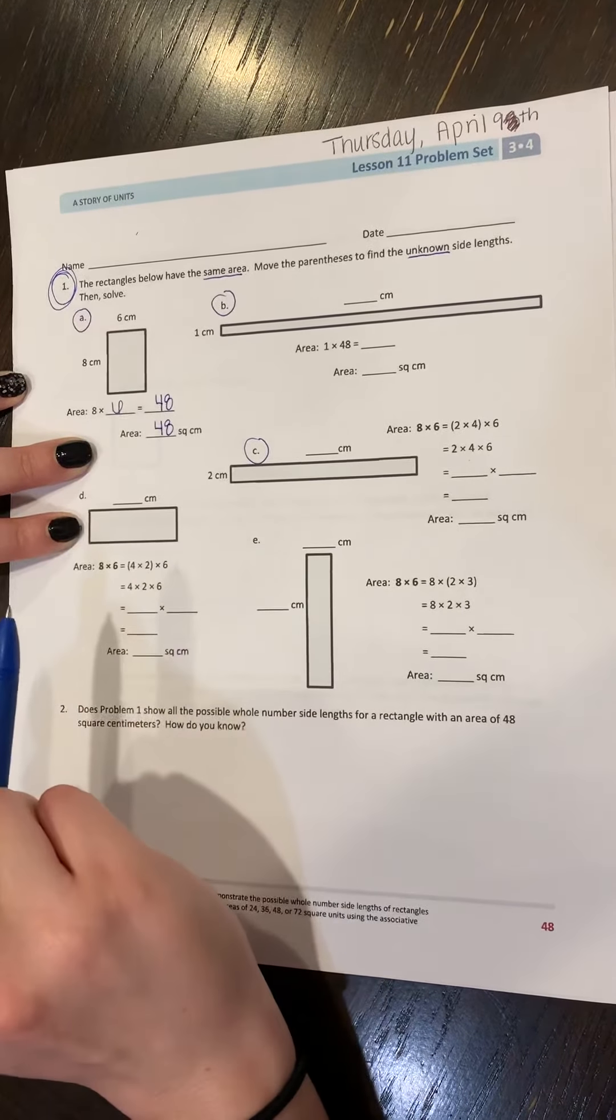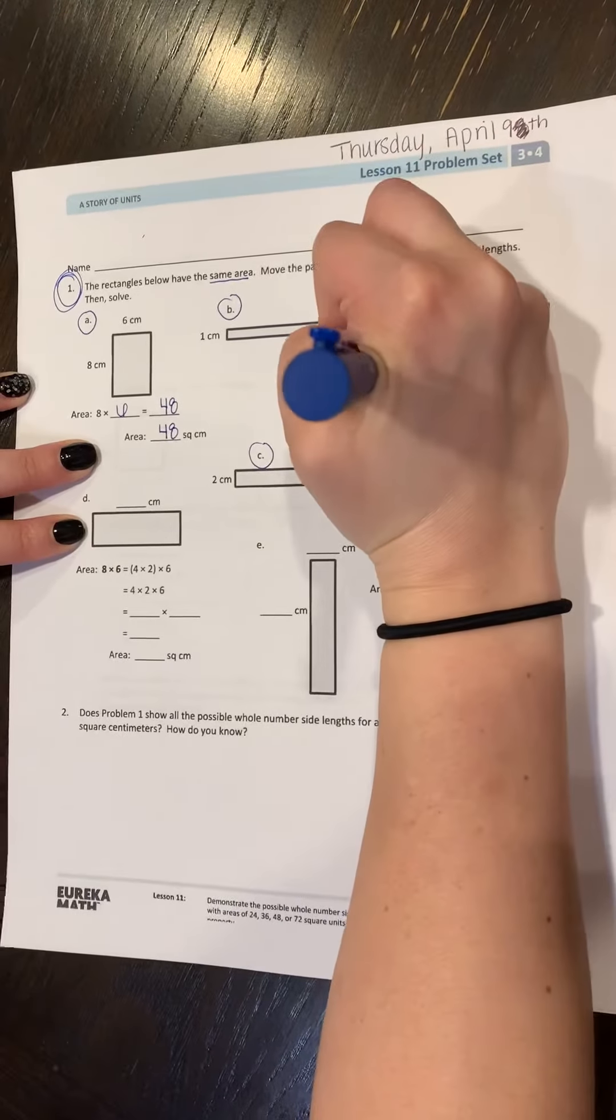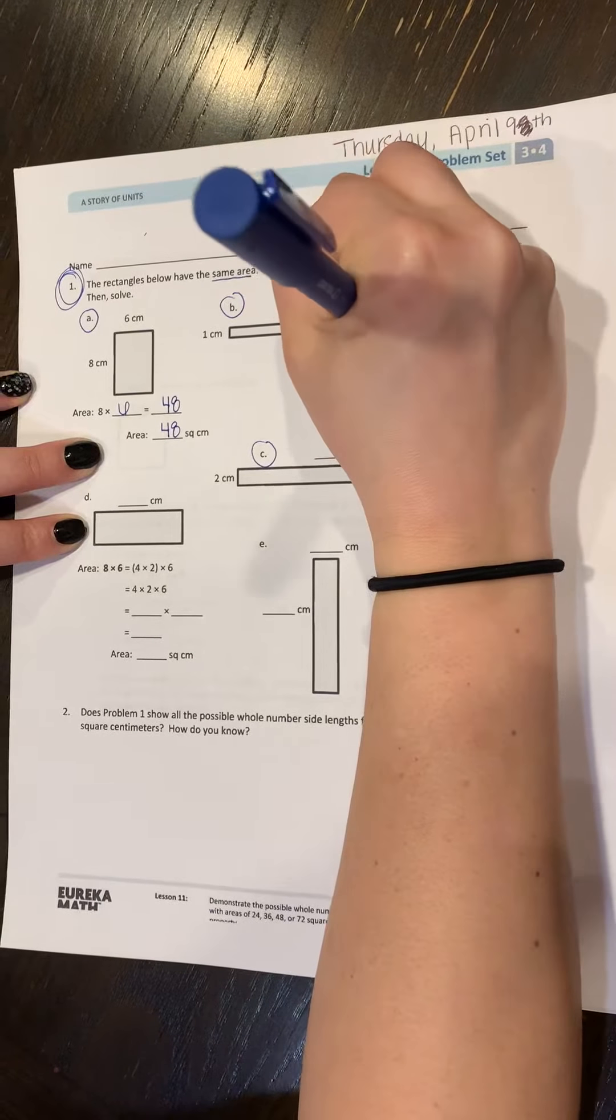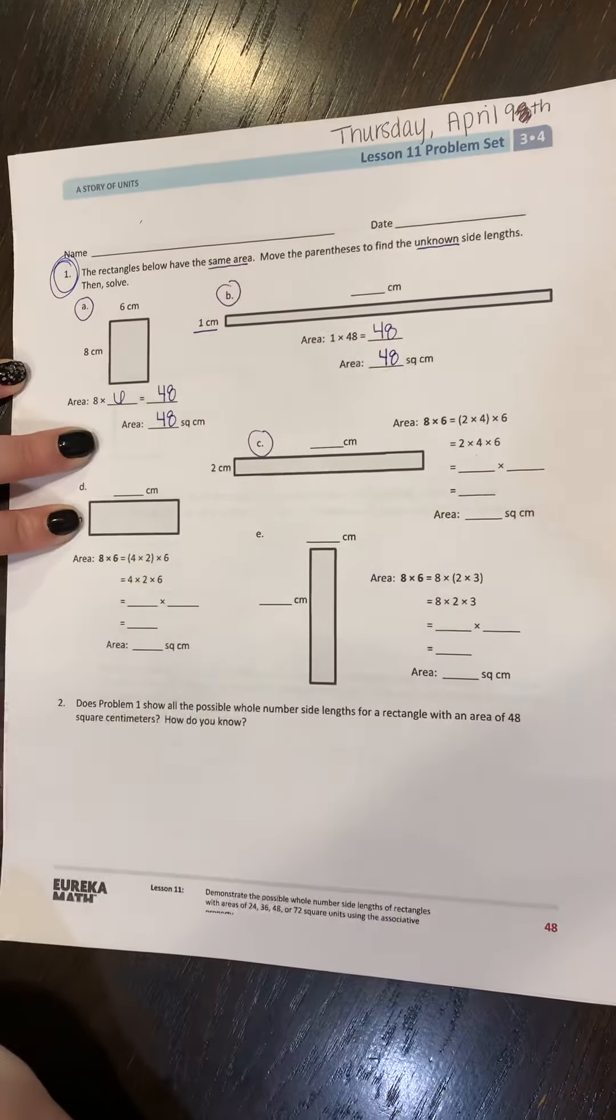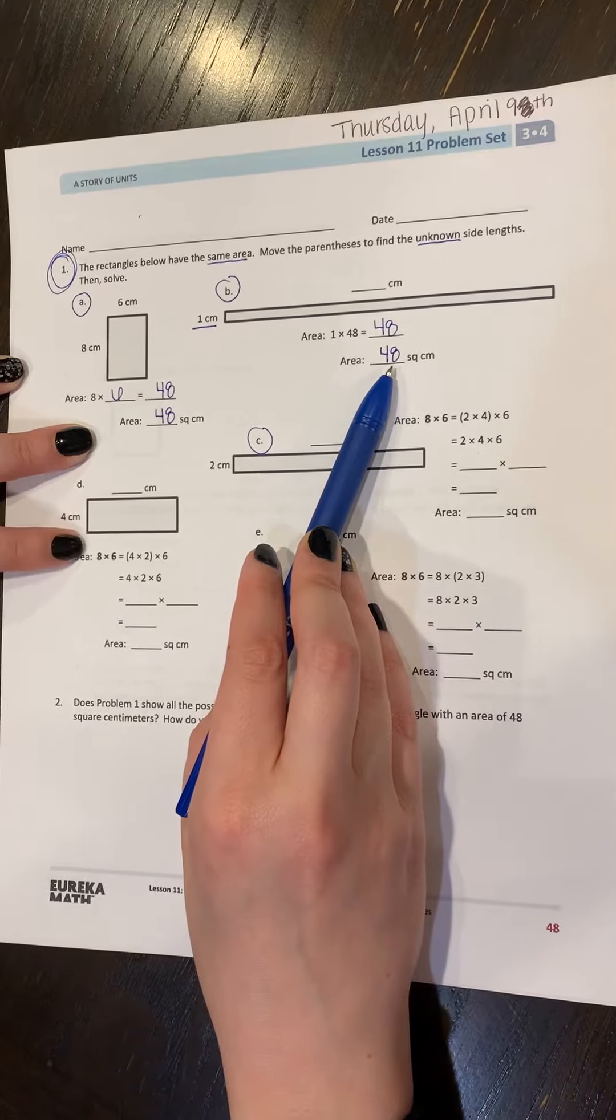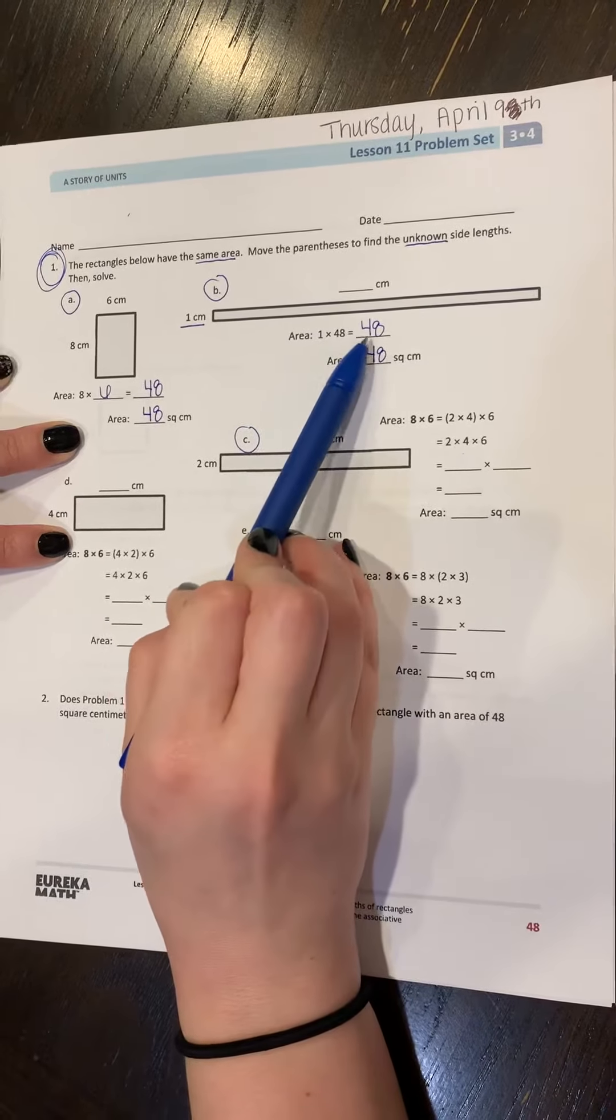So we already know for B what the area of this rectangle is because it's going to be the same as what it is for A. So our area is already 48 square centimeters. So if we take a look at this rectangle, they've taken this rectangle and they've stretched it out, which means this side is one centimeter with an area of 48 centimeters. So I'm thinking to myself, one times what equals 48?